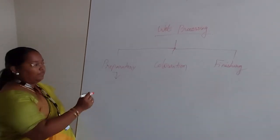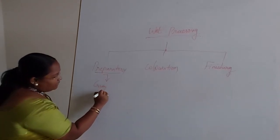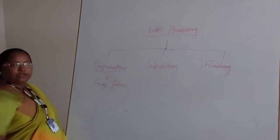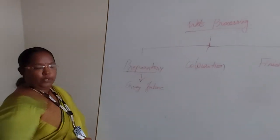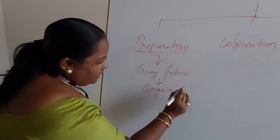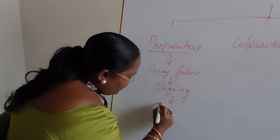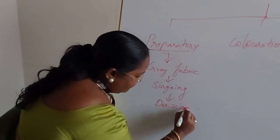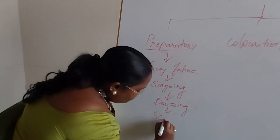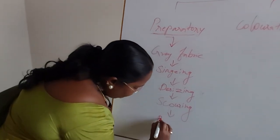I am going to give the classifications of the preparatory process. Initially, we use the raw material which is called gray fabric. Gray fabric is introduced in the preparatory process. The second step is singeing. The third one is desizing. And the next one is scouring.